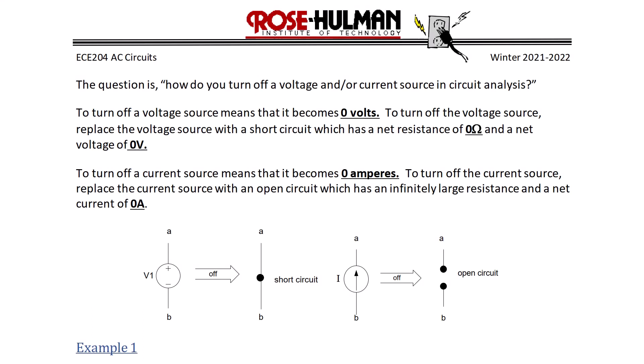Recall that to turn off a voltage source, we replace it with a wire which is a short circuit and has a value of zero volts. And to turn off a current source, we replace it with an open circuit which has a current of zero amps. Also, an open circuit has infinite impedance and a short circuit has zero impedance.